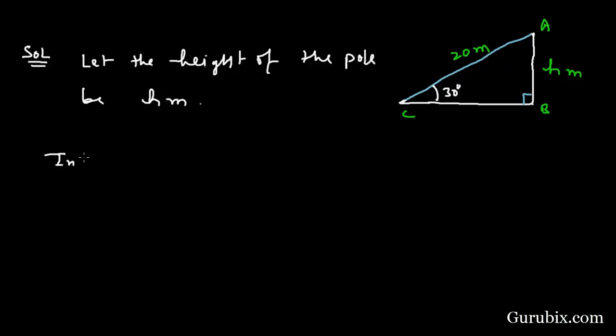In triangle ABC, we have to calculate AB where AC is given. Therefore this ratio of AB and AC equals sine 30 degrees. We know sine 30 is 1 over 2. AB is H, AC is 20 meters.